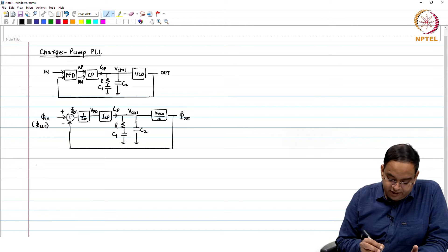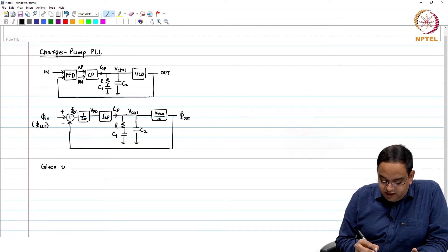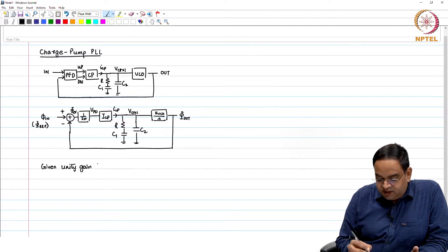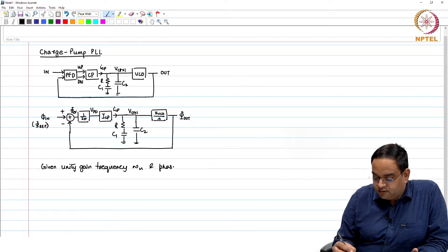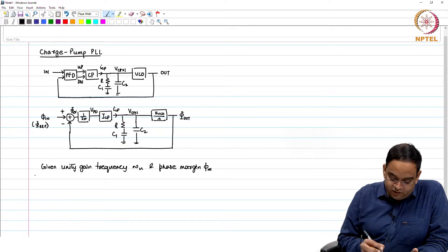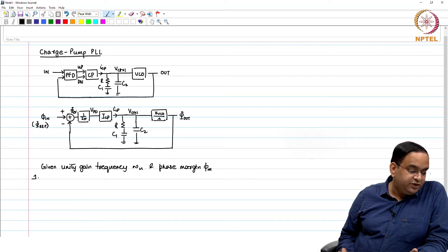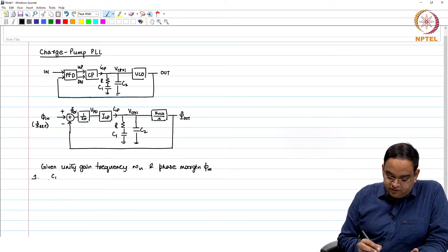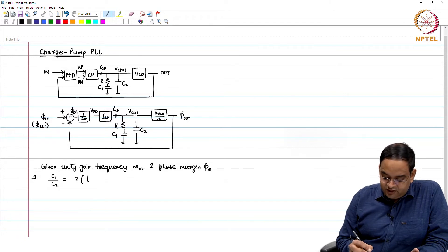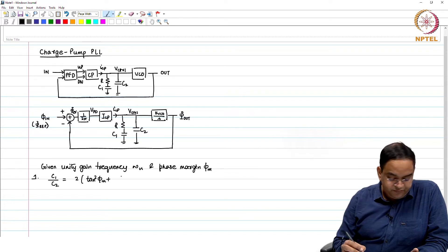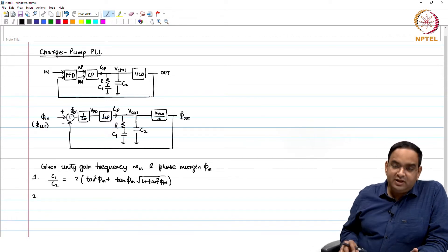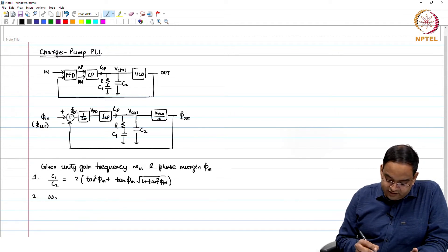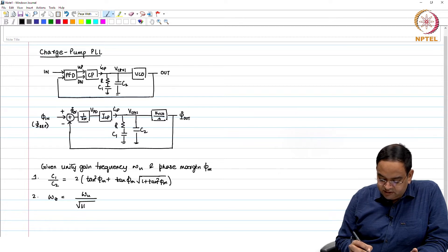What we said in the procedure was that you need to be given the unity gain frequency ω_u and phase margin φ_m. The first step included calculation of the C1/C2 ratio depending on your phase margin. This turned out to be 2 times 10 squared φ_m plus 10φ_m times the square root of 1 plus 10 squared φ_m, where φ_m is the phase margin.